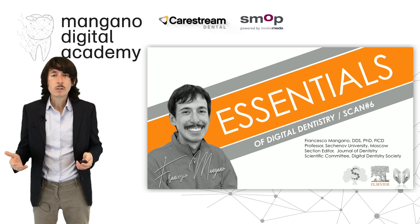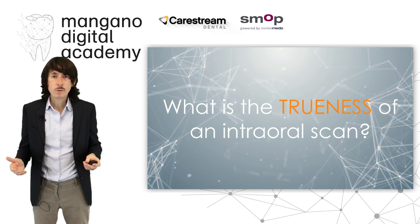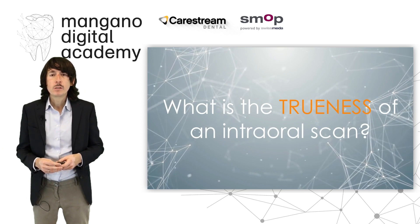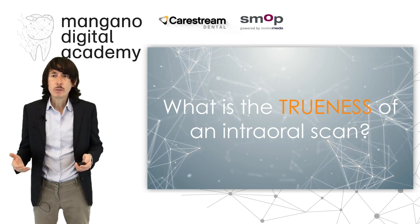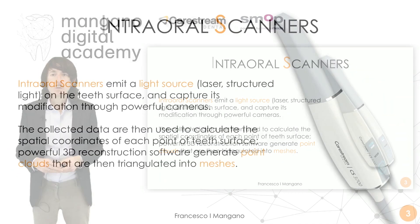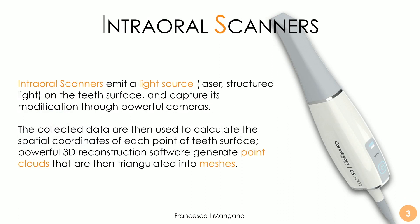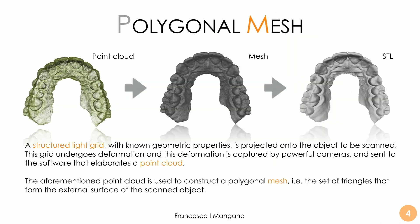The question we will try to answer today is: what is the trueness of an intraoral scan? We should refer to the intraoral scan itself and not to the scanner. There are a lot of variables to consider. The intraoral scanner emits a light source — usually a structured light grid or sometimes a laser — onto the teeth surface, and captures its modification through powerful cameras. The collected data are used to calculate the spatial coordinates at each point, and a powerful 3D reconstruction software generates point clouds that are then triangulated into meshes — what we obtain is a mesh, a standard tessellation language STL file.